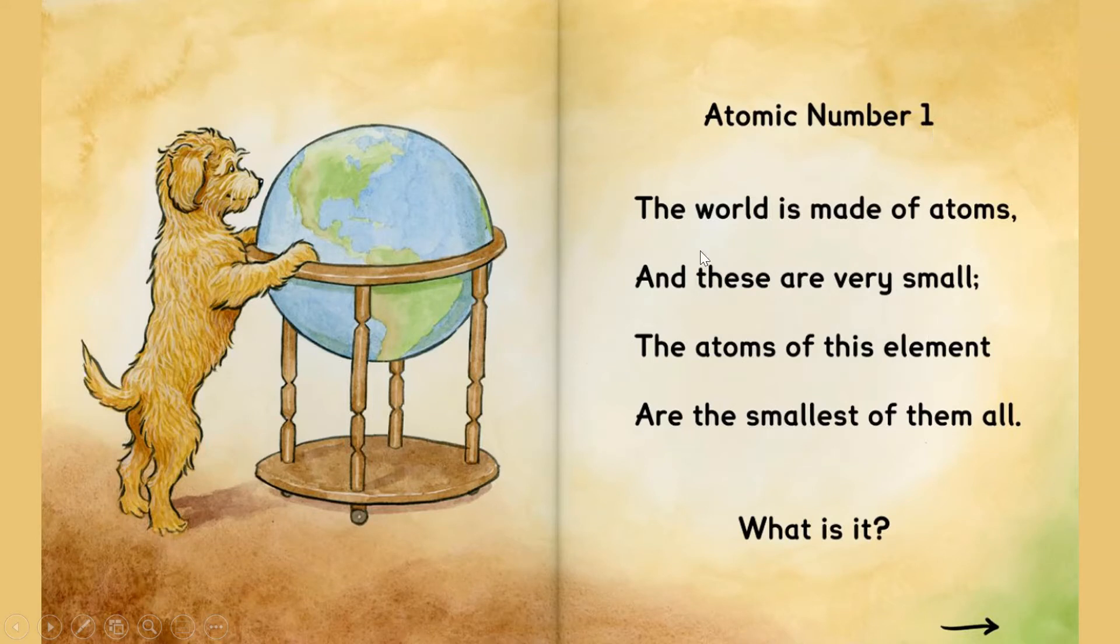Atomic number one. The world is made of atoms, and these are very small. The atoms of this element are the smallest of them all. What is it?